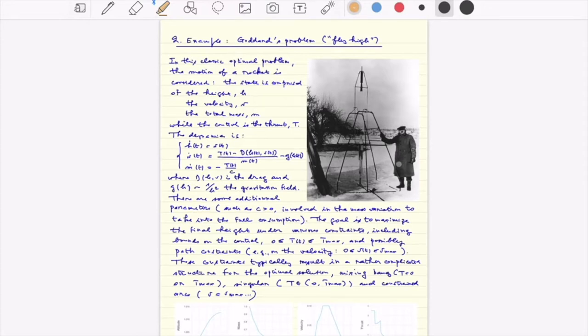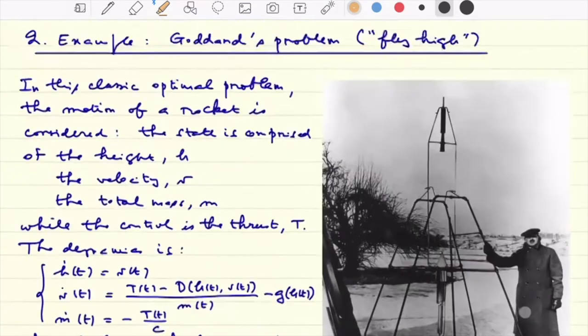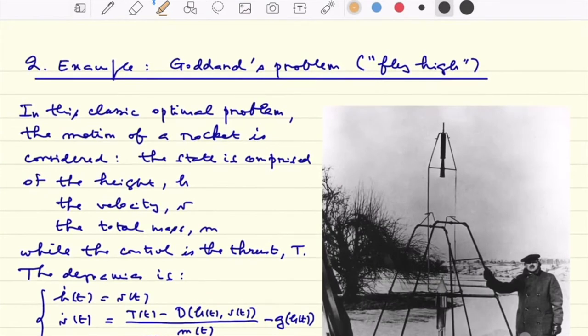The well-known example we'll look at is the so-called Goddard problem. So this is the fly-high problem, since we want to maximize the height of some missiles, some rockets. The idea is that in the classical optimal control problem, which is a well-known one since the 50s at least, the motion of a rocket is considered.